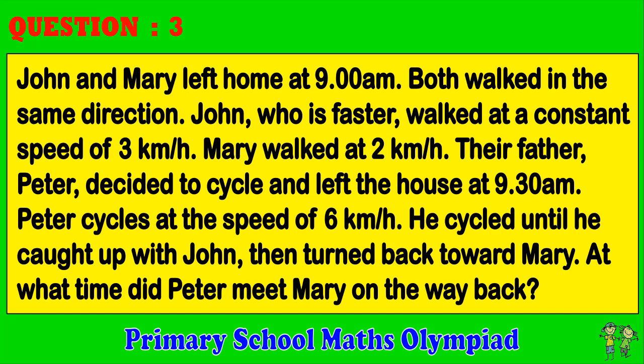Question 3. John and Mary left home at 9 a.m. Both walked in the same direction. John, who is faster, walked at a constant speed of 3 km per hour. Mary walked at 2 km per hour. Their father, Peter, decided to cycle and left the house at 9:30 a.m. Peter cycles at the speed of 6 km per hour. He cycled until he caught up with John, then turned back toward Mary. At what time did Peter meet Mary on the way back?